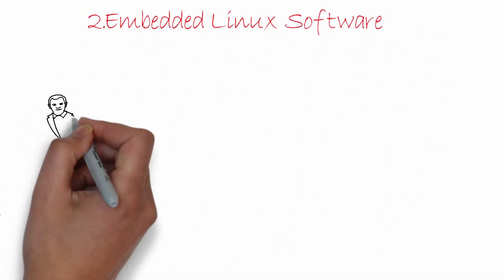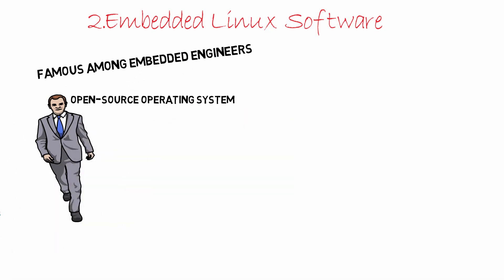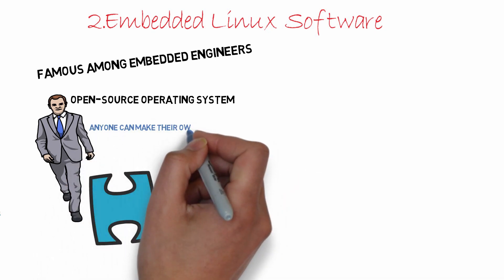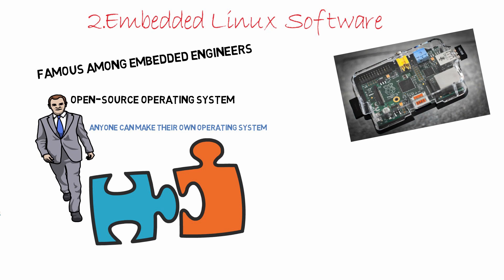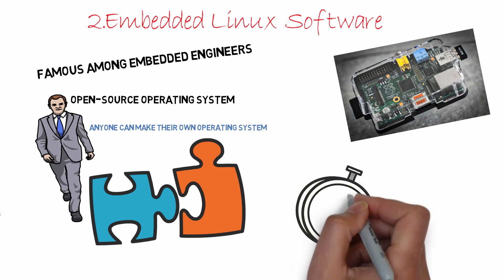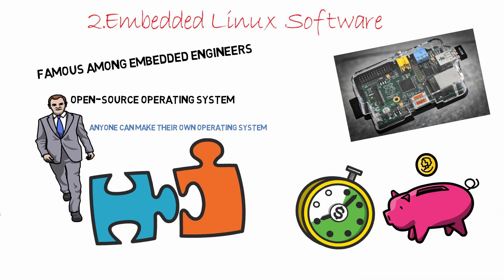Embedded Linux: Linux is famous among embedded engineers as it is an open-source operating system with a customizable kernel. This means anyone can make their own operating system to suit their particular needs by keeping just the necessary parts, thus keeping the size small yet supporting their device's functionalities. On top of the kernel, they can build their own application code. Famous examples include Raspberry Pi, BeagleBone, and Yocto-based devices. This reduces development time and costs significantly compared to building your own embedded operating system.